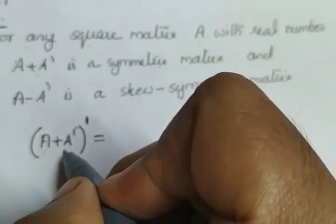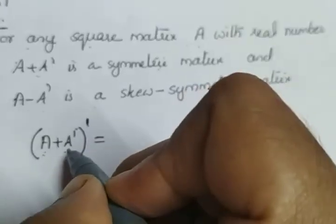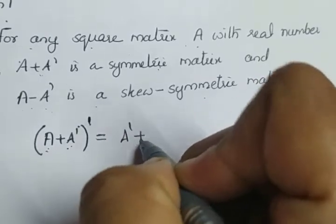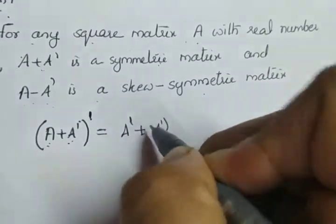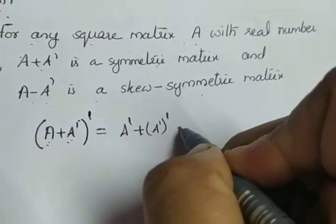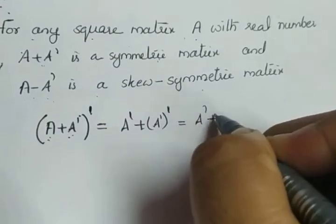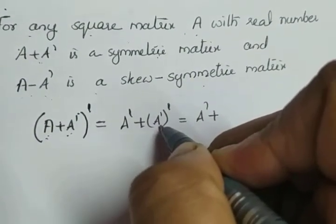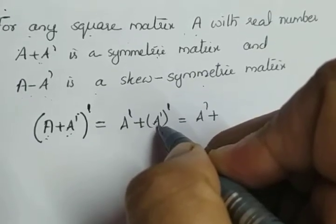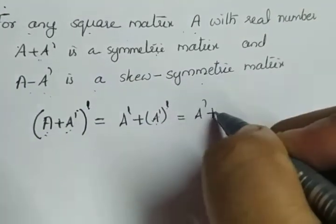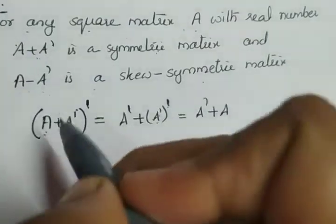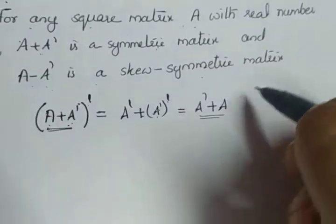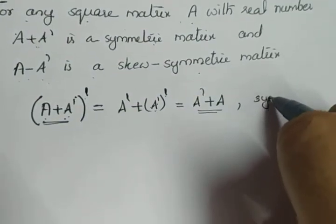So, (A plus A transpose) transpose equals A transpose plus (A transpose) transpose, which equals A transpose plus A. Again, we have the property that the transpose of the transpose of A is A itself. So what we got is — when we took the transpose, we got the same matrix — that implies A plus A transpose is symmetric.